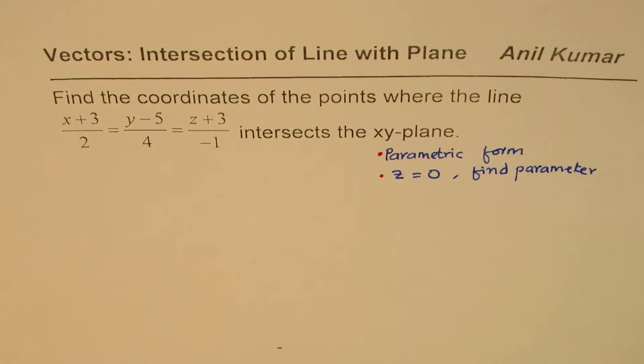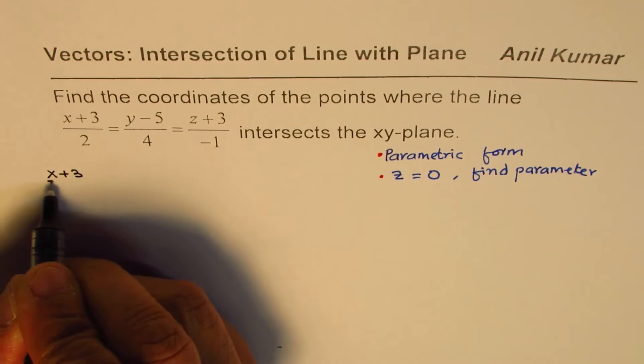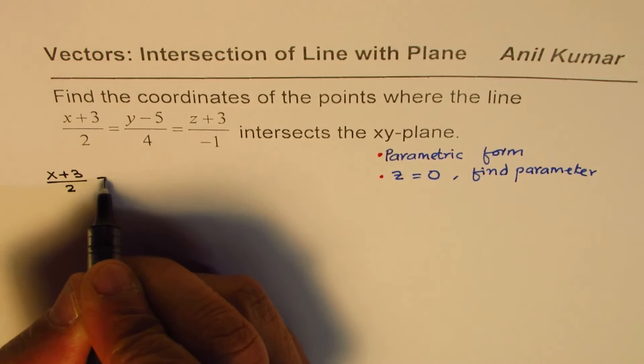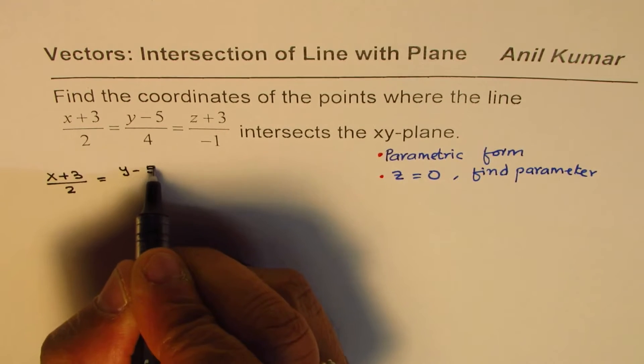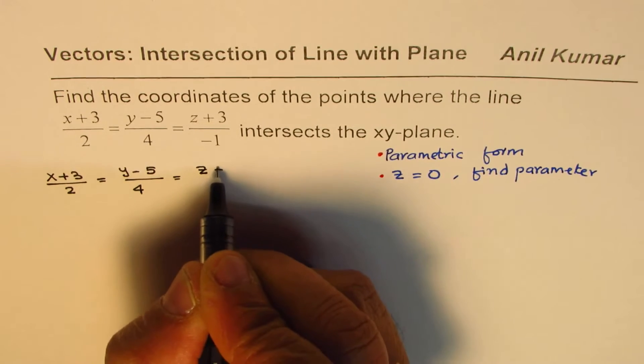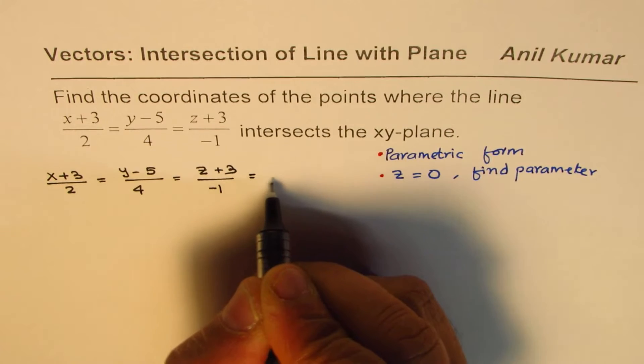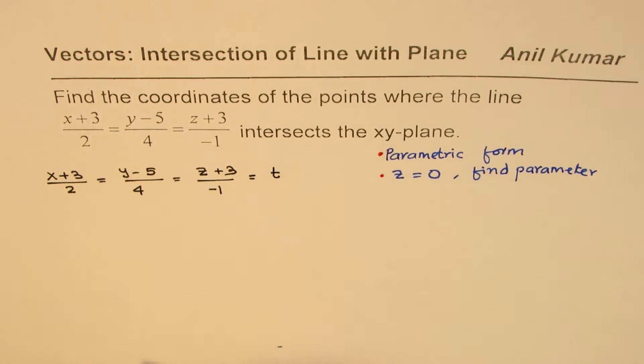how to write the parametric form? Well, the equation given to us is x plus 3 over 2 equals to y minus 5 over 4 equals to z plus 3 over minus 1. So all this will be equal to the parameter, let us say, t.